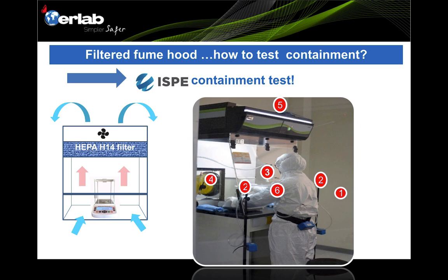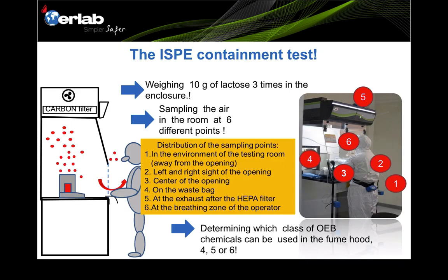To summarize, the filtered fume hood will be the preferred way to provide protection for weighing applications. According to ISPE, a proper filtered fume hood needs to go through a containment test to ensure it provides maximum protection to the user. This picture shows how the containment test is done. During the test, they basically weigh 10 grams of lactose three times in the enclosure, and air samples are collected from six different points.